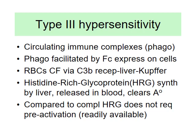Phagocytosis occurs via Fc segments. Red blood cells have a complement fixation capability — C3b is an opsonin that attaches to the red blood cell, and there are I receptors for it. There are questions about this mechanism. Some students' podcast questions showed they were not listening carefully, since the answers were already there in the material.